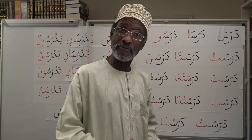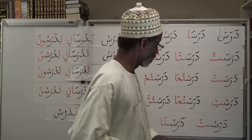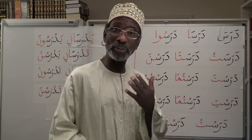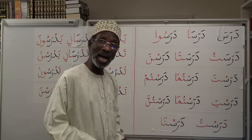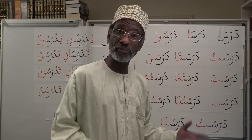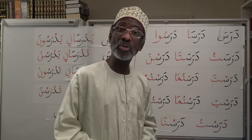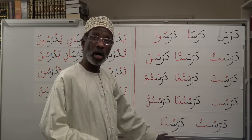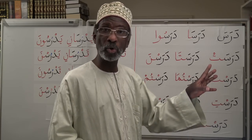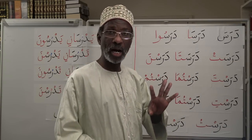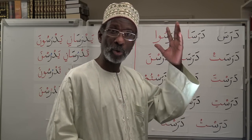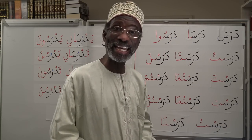Now let's do the first person — I and we. Again, you need sukun. You say Darast and then you add tu: I studied. Male and female say the same thing. And for we studied, sukun as well and we add na: Darastna. The first person in Arabic is gender neutral. That is the complete picture for conjugating the verb, and this is the fundamental foundation for all conjugation.